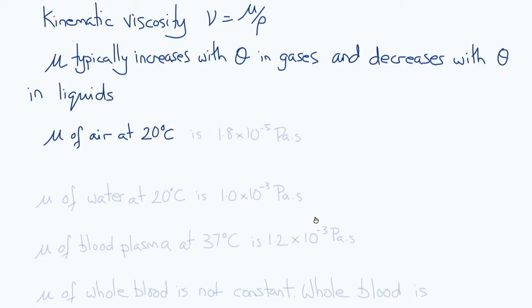As a few examples, the viscosity of air at 20 degrees Celsius is 1.8 by 10 to the minus 5 pascal seconds. The viscosity of water at 20 degrees Celsius is 1.0 by 10 to the minus 3 pascal seconds, 50 times greater.